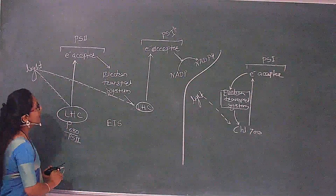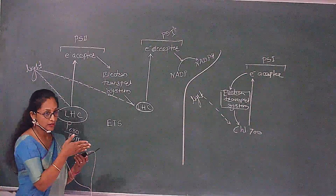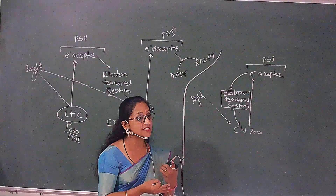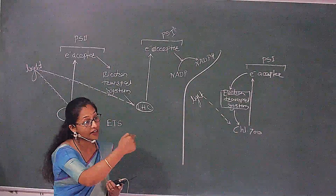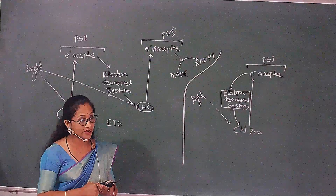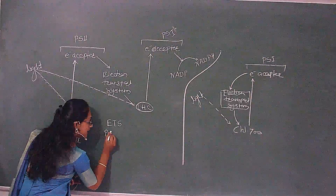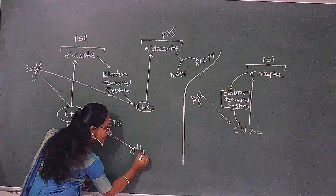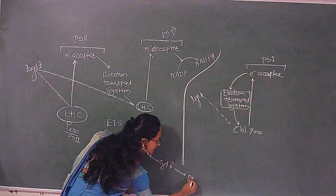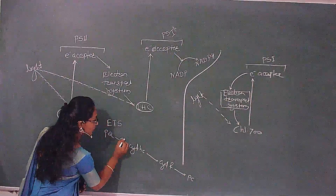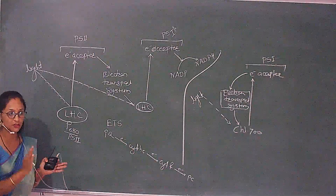As we explained earlier, the electron transport system involves: from the electron acceptor — PQ, cytochrome B6, cytochrome F, and PC. These are the systems that transport electrons. PQ to cytochrome B6, cytochrome F, to PC — this is called the electron transport system.